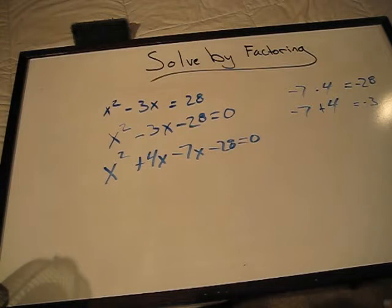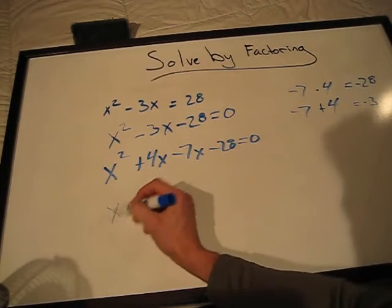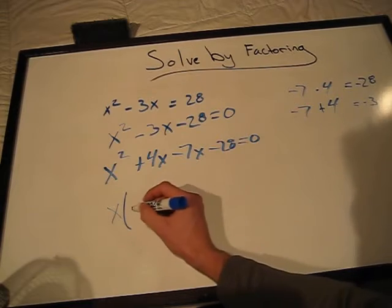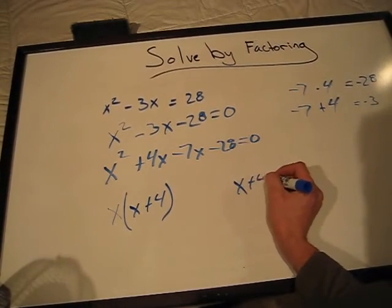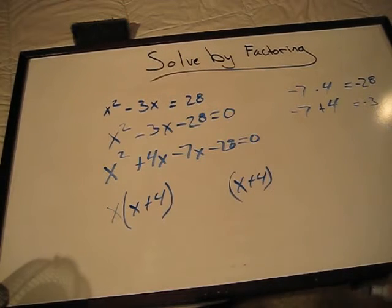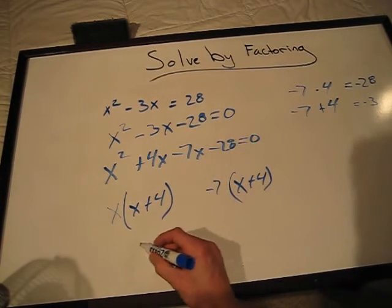Now we'll factor out what we can. We'll take x out of the first two terms to get x(x + 4), and we'll take -7 out of the last two terms.